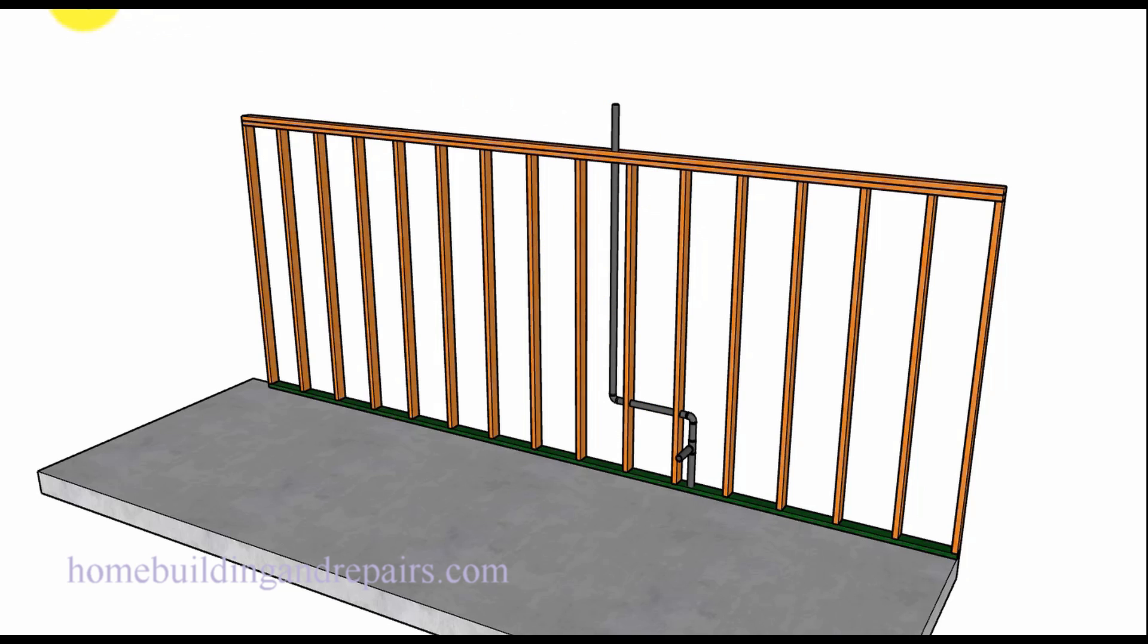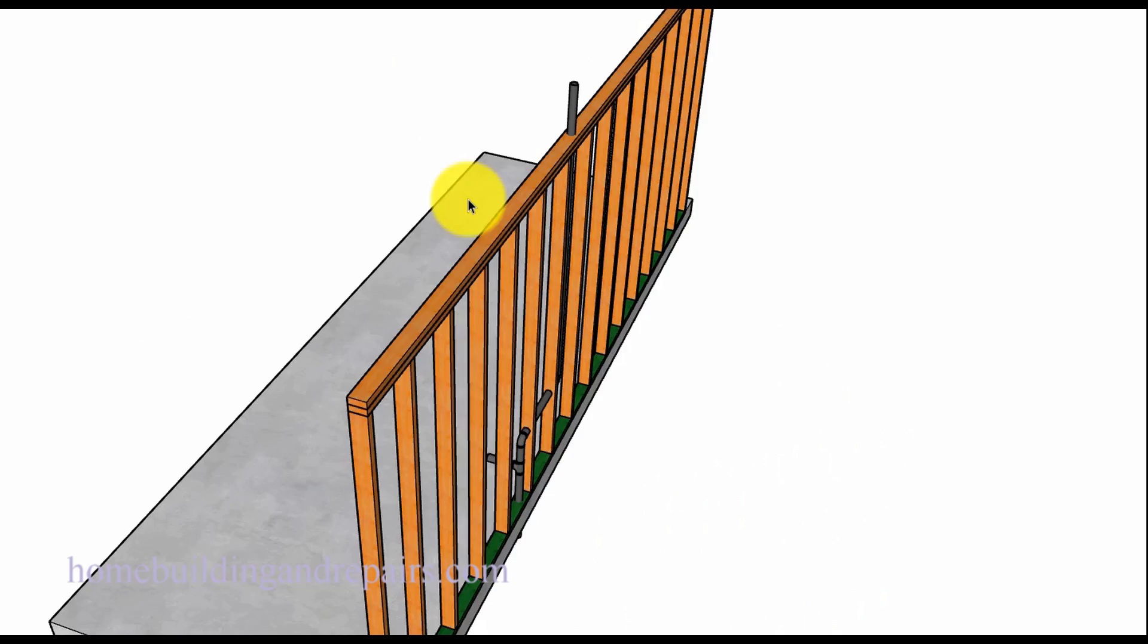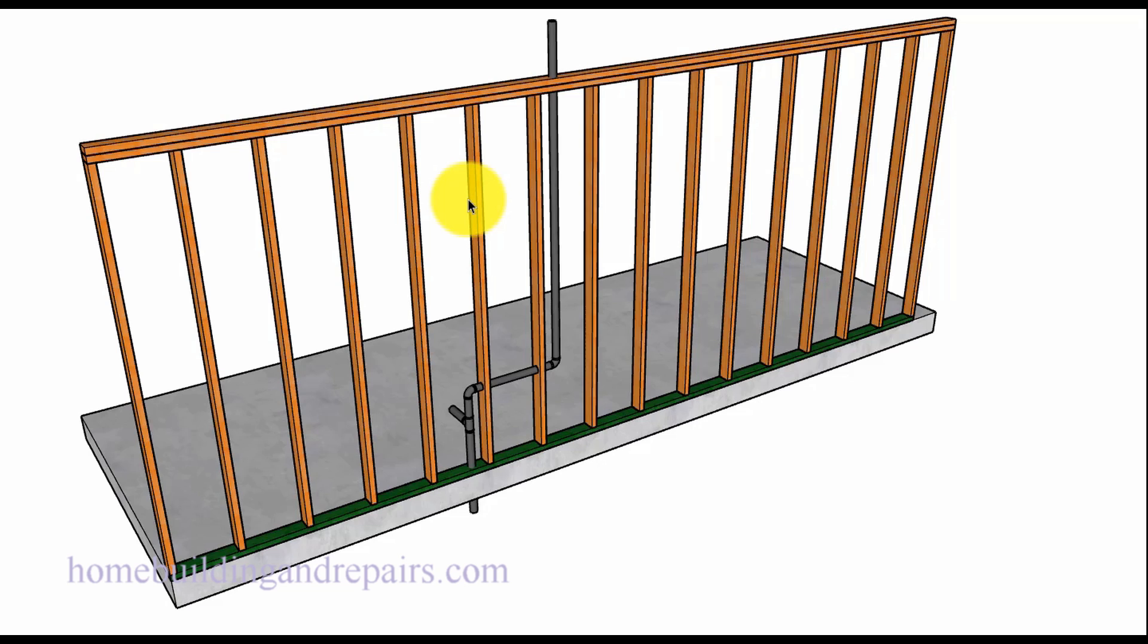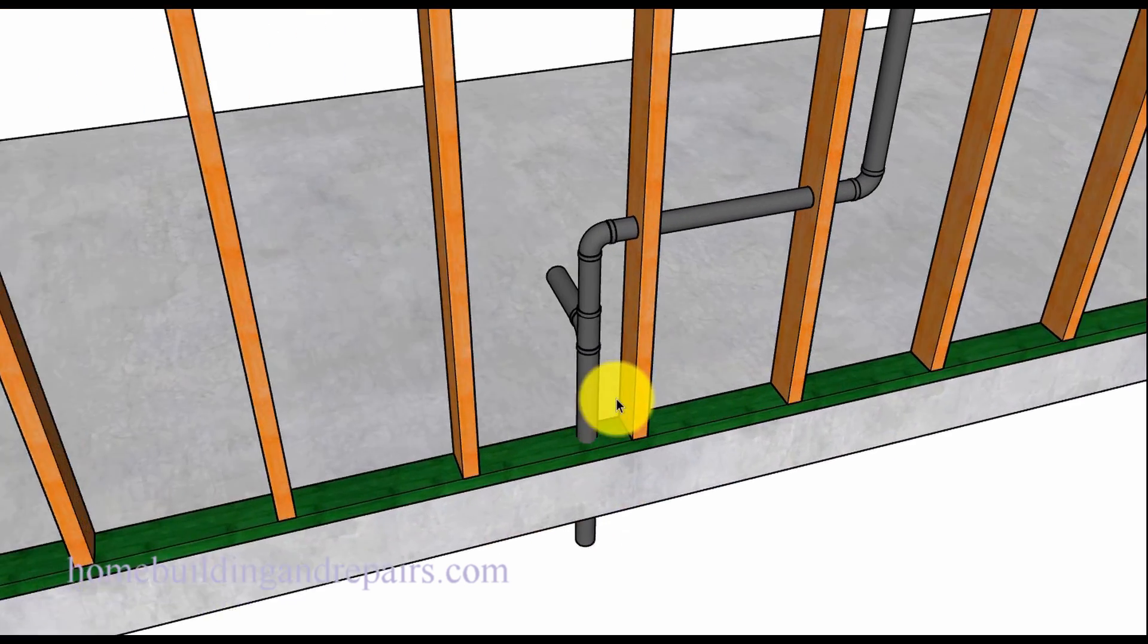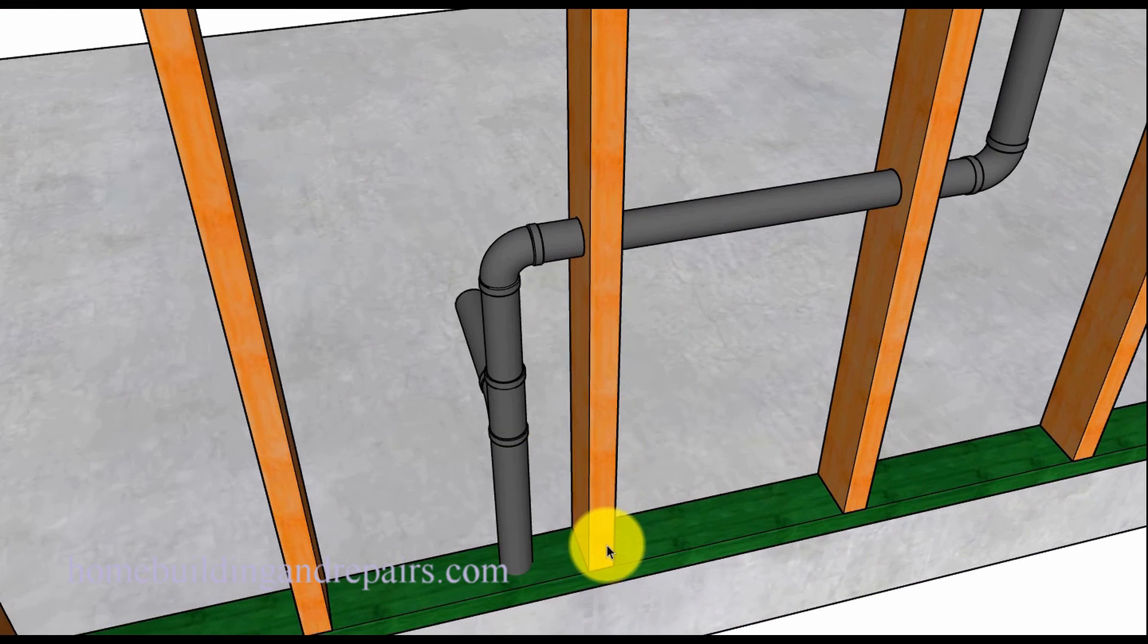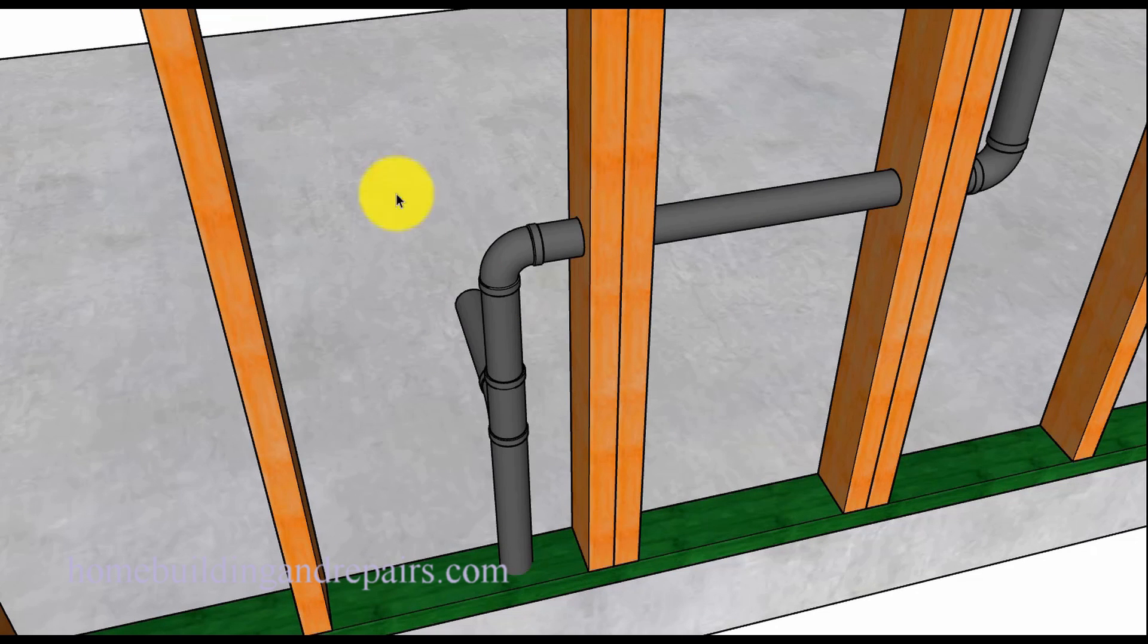So let's start with a load bearing wall. The code book says load bearing exterior walls but we're just going to refer to these as load bearing walls. If you have a plumbing pipe going through a 2x4 or 2x6 wall and you have a hole that is larger than 40% of the diameter of the wall framing stud, you'll get more information on that in a bit.